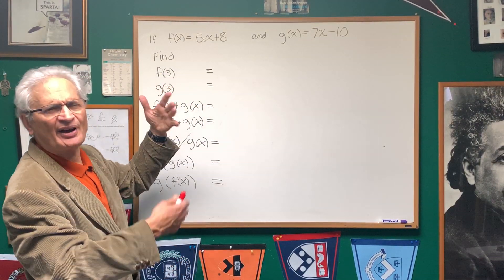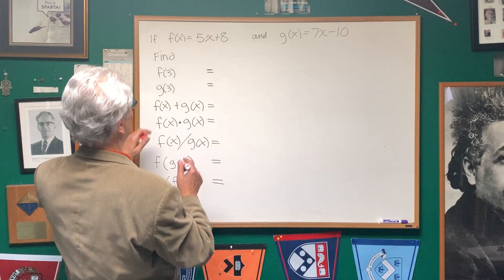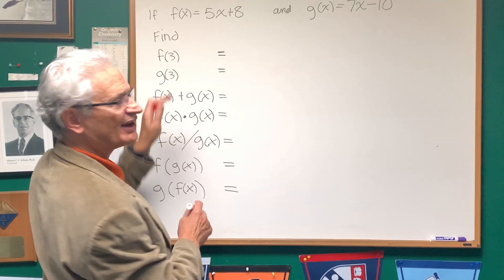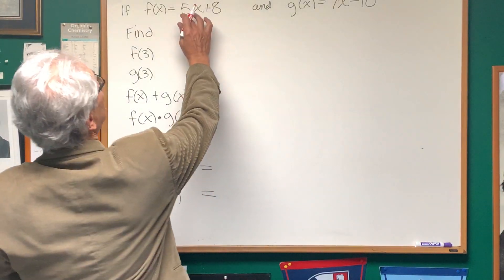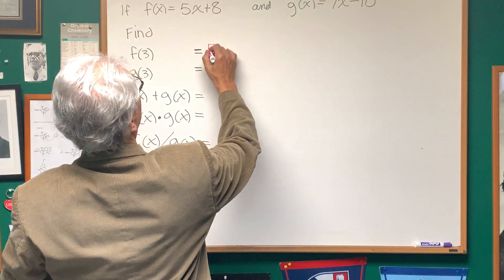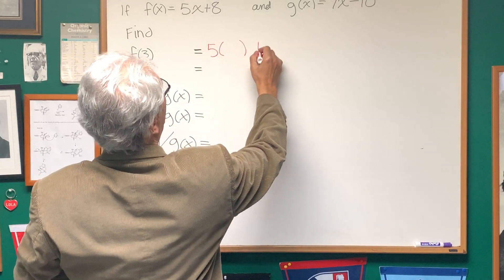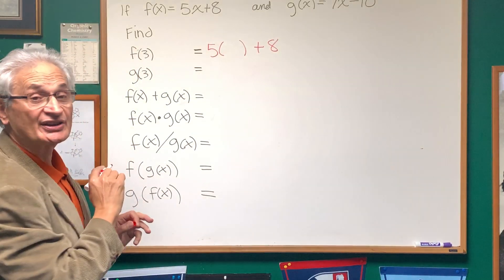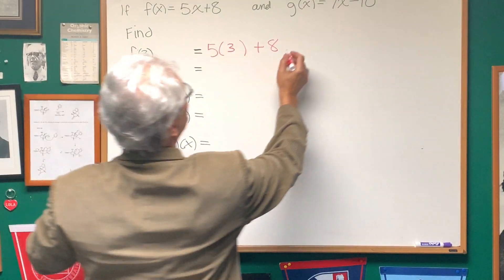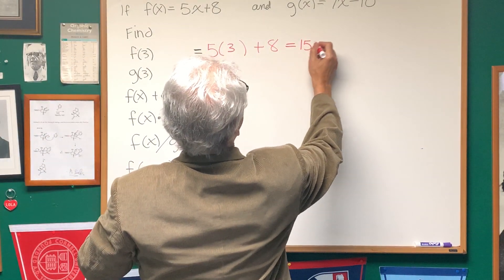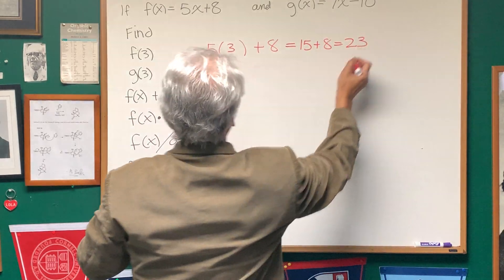So now let's start off with a very basic problem in function notation. Find f(3), that is, the value of the function when x is equal to 3. So we take the value of the function, 5 times x plus 8, and wherever an x appears on the right side, we're going to replace it with 3. So it's 5 times 3 plus 8, 15 plus 8, and that's equal to 23.